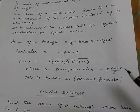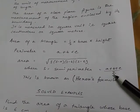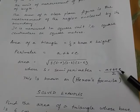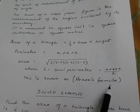We calculate semi-perimeter by adding all the sides divided by 2: a plus b plus c by 2. This formula is known as Heron's formula.